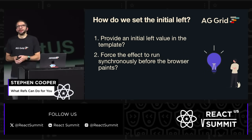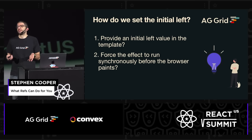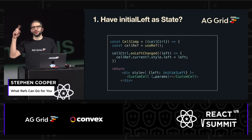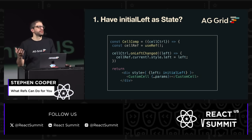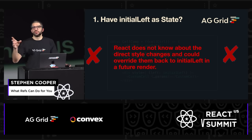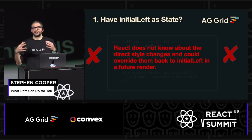We might have two different ideas. Maybe we can provide an initial left value to the template via state and then start updating it. Or maybe we just need to find a way of forcing the browser to run synchronously. If we look at the approach of adding optional chaining to handle the undefined and setting the style with an initial left property — I would say, don't do this at all. React does not know about the direct style changes that you're making. In a future render, it might come back and set the style back to that initial left property. You do not want to mix and match these versions because then you're fighting against React and you could get in some really bad, messy situations.